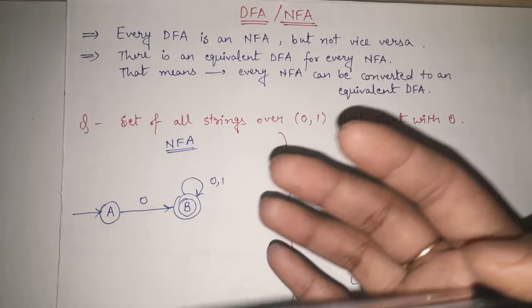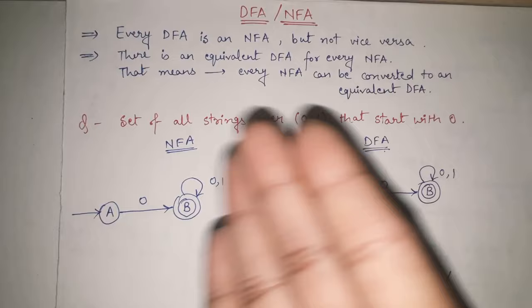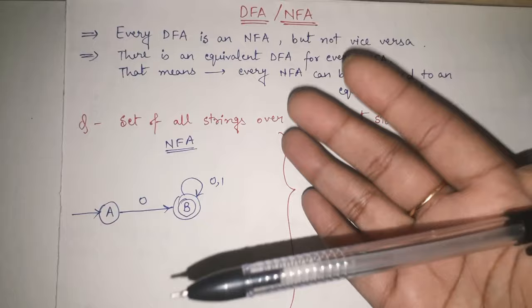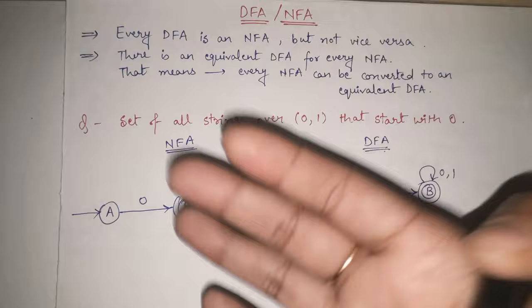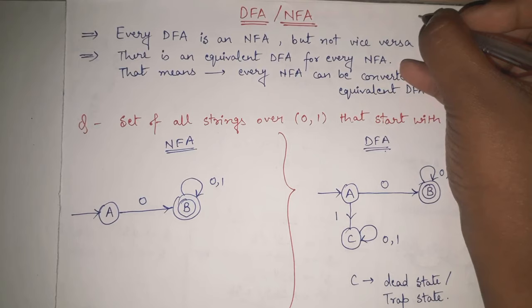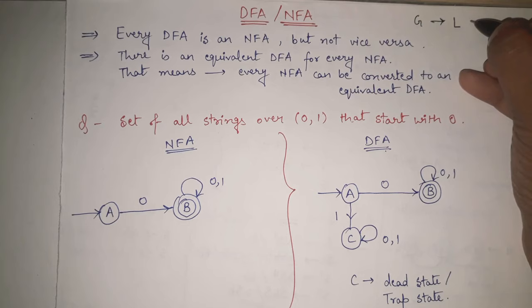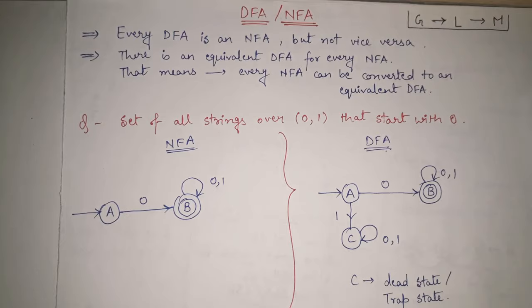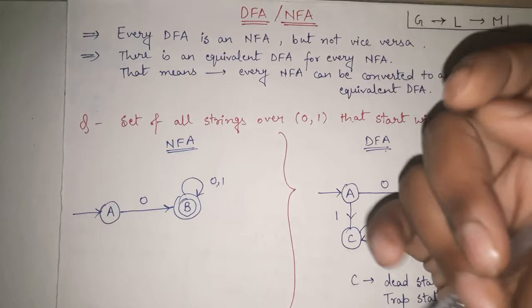Let me give you an overview. We have four types of grammar: Type 0, Type 1, Type 2, and Type 3. With respect to these four types of grammar, we have four different types of languages, and correspondingly four different types of machines that accept those languages. Grammars map to specific languages, and specific machines handle those languages.